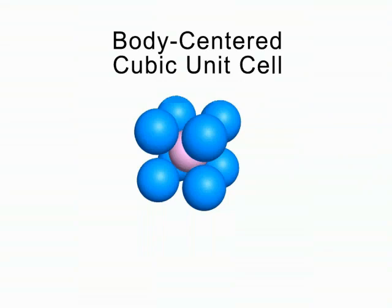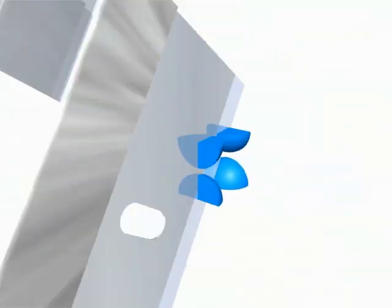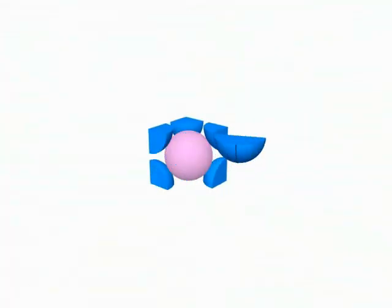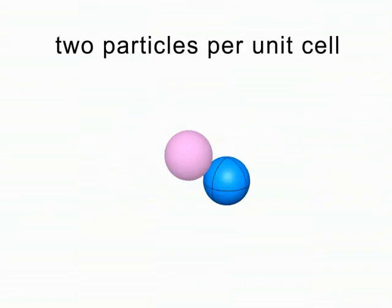Each corner particle does touch the one in the center. The actual unit cell consists of portions of the corner particles and the whole one in the center. Eight-eighths give one particle, and the one in the center gives another for a total of two particles.